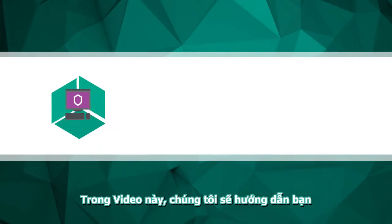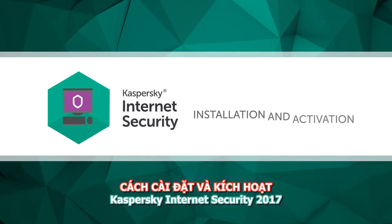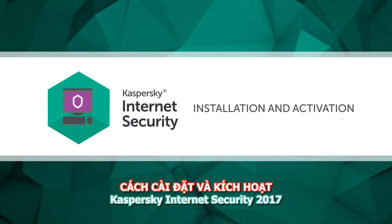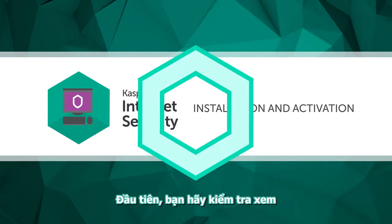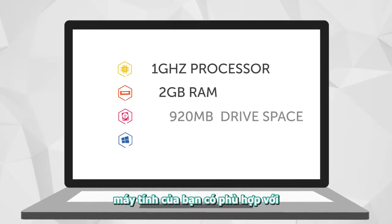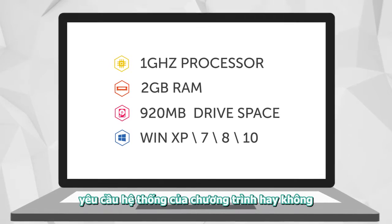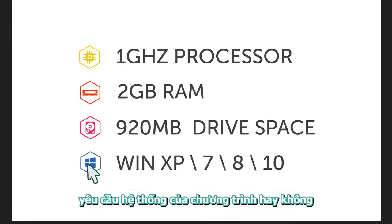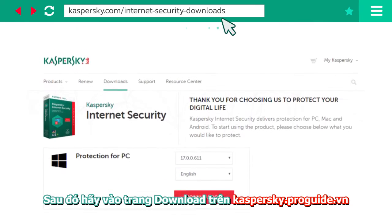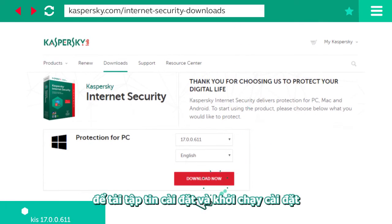In this video we'll show you how to install and activate Kaspersky Internet Security 2017. First of all, make sure your computer meets Kaspersky Internet Security system requirements. Then go to the Kaspersky lab site, download the installation file, and launch it.